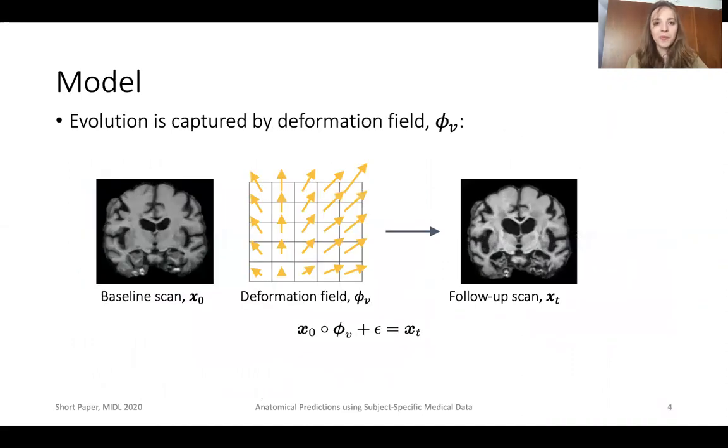To tackle this problem, we model the evolution of the brain using a deformation field. Basically, the follow-up scan is given by the baseline scan warped by some deformation field that we want to predict.